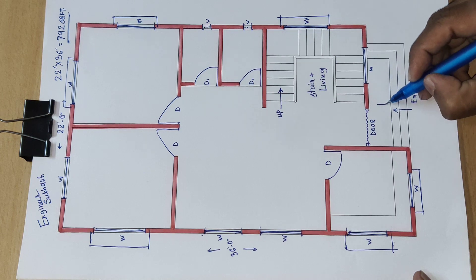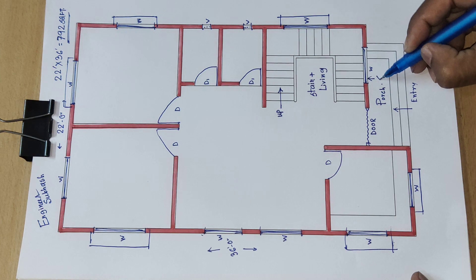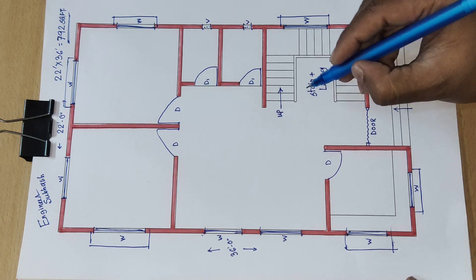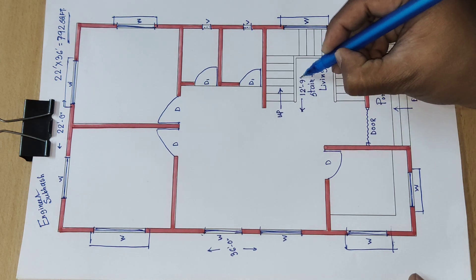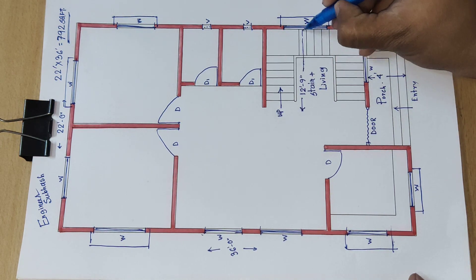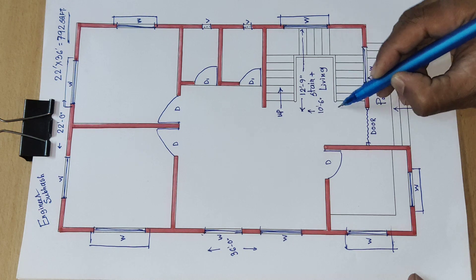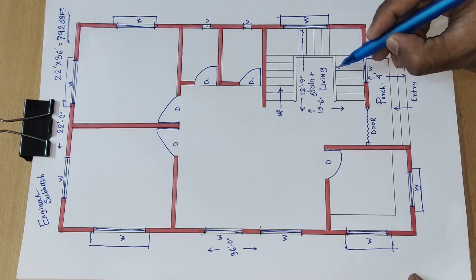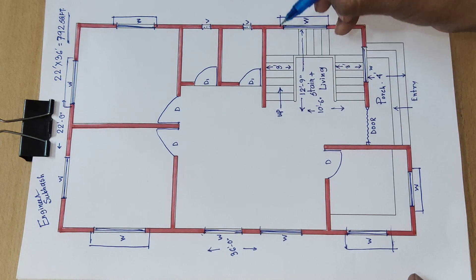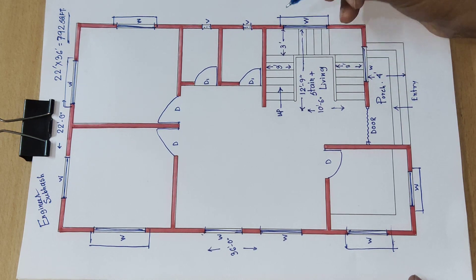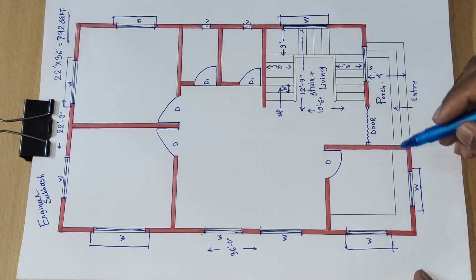Here is the porch area, which is 4 feet wide. The stair area is 12 feet 9 inch. The thread width is 3 feet, and here it is also 3 feet wide. Here the measurement is 10 inch.